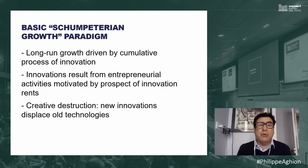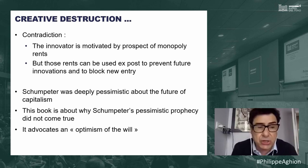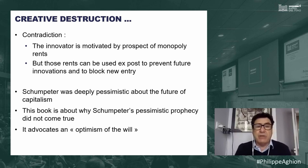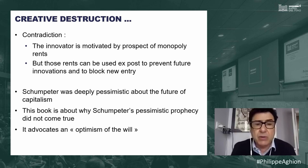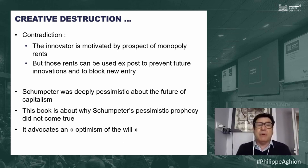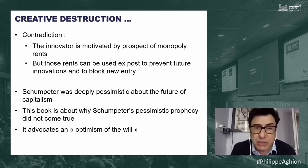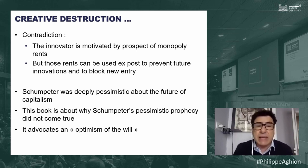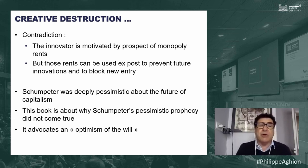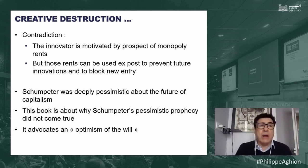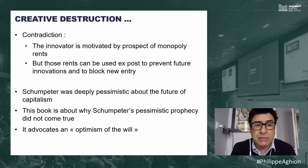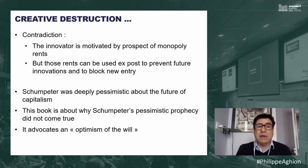At the heart of this growth model lies a fundamental contradiction. On one hand, you need monopoly rents to motivate innovation. On the other hand, innovators are tempted to use those rents to prevent subsequent innovation and block entry, because they don't want to be victims of creative destruction themselves. This contradiction runs through the whole book — whether discussing the industrial takeoff, the middle income trap, secular stagnation, inequality, or the environment.